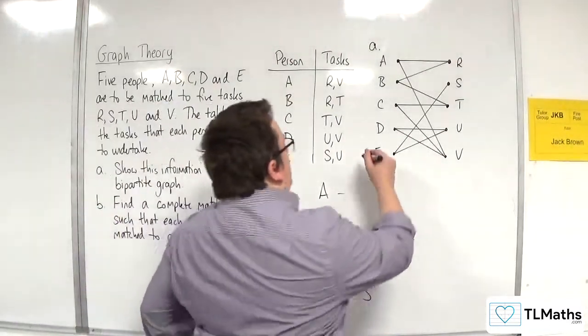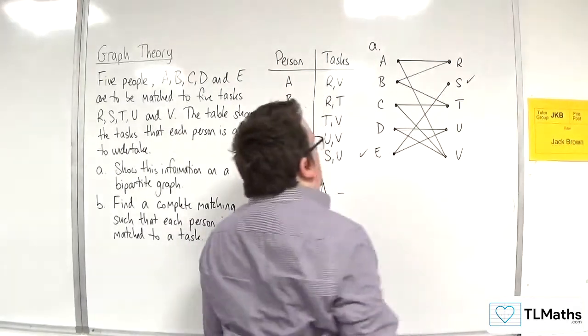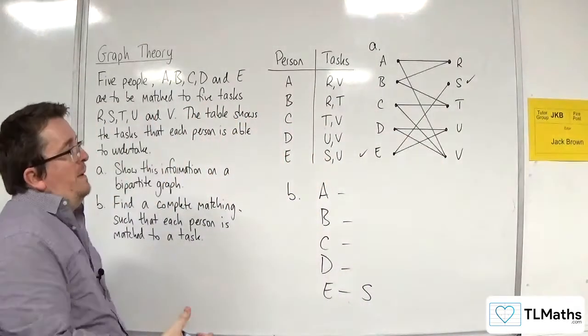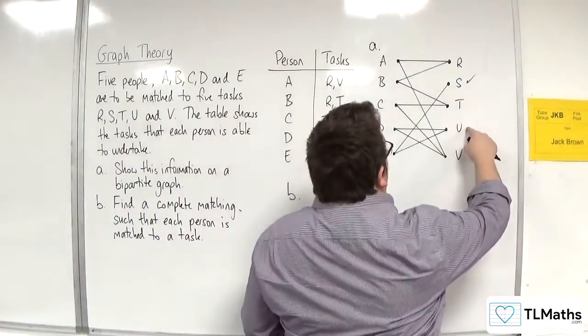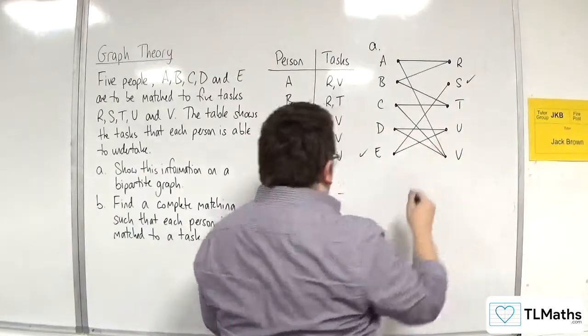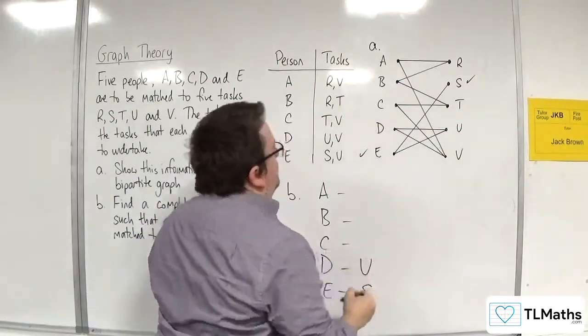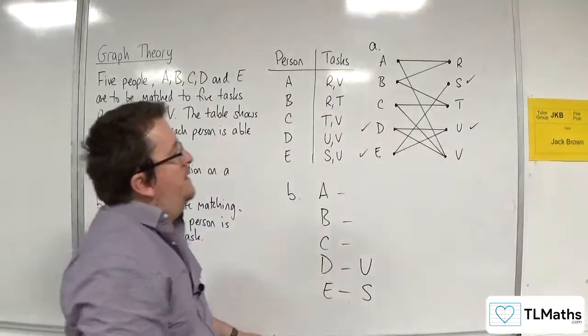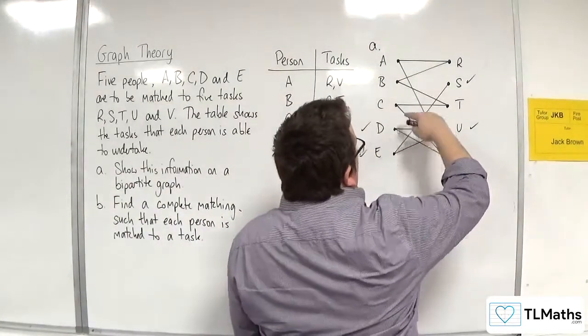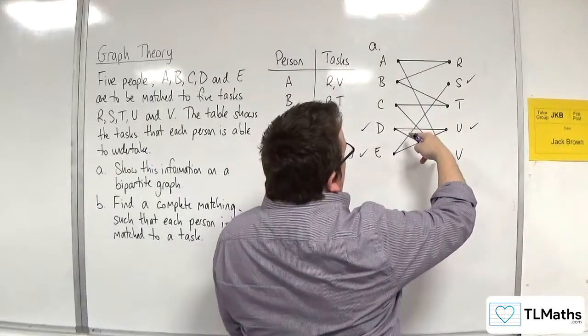That means E and S are dealt with, so E can't do U. The only other person that can do U is D, so D has to do U. Now if D is doing U, D can't do V.